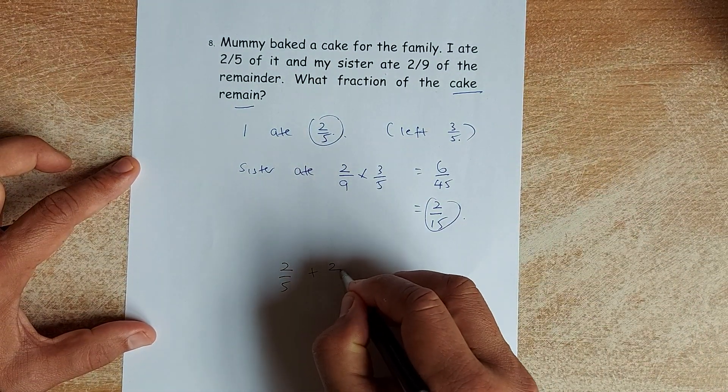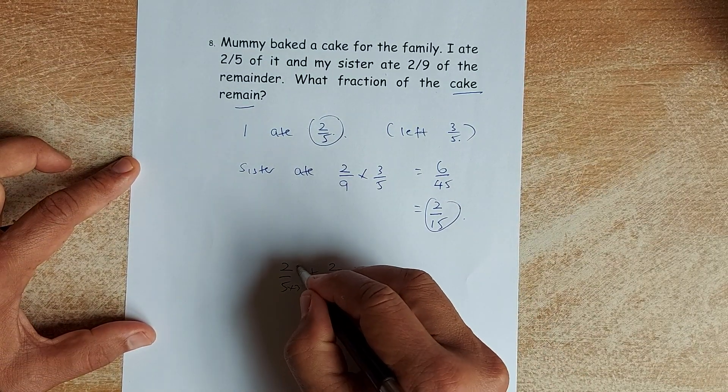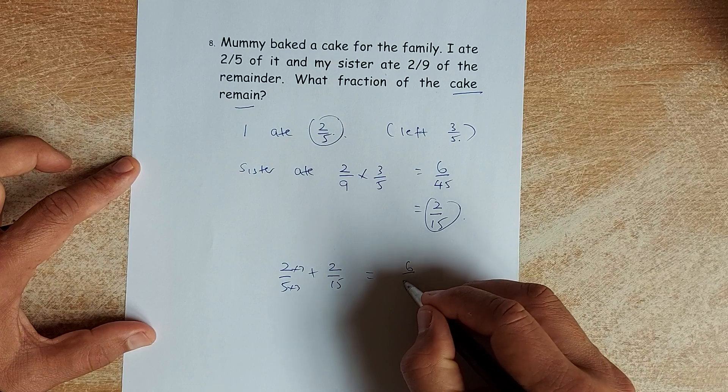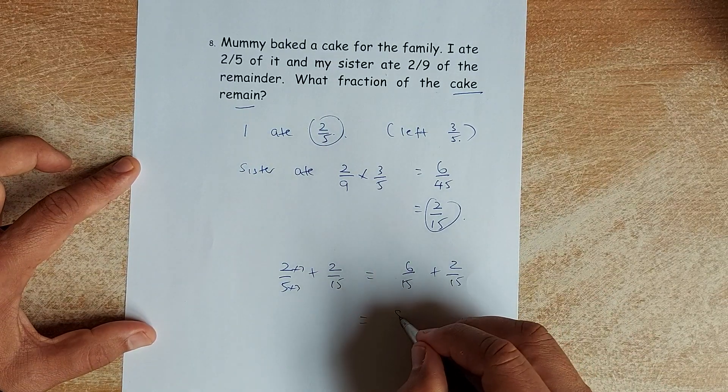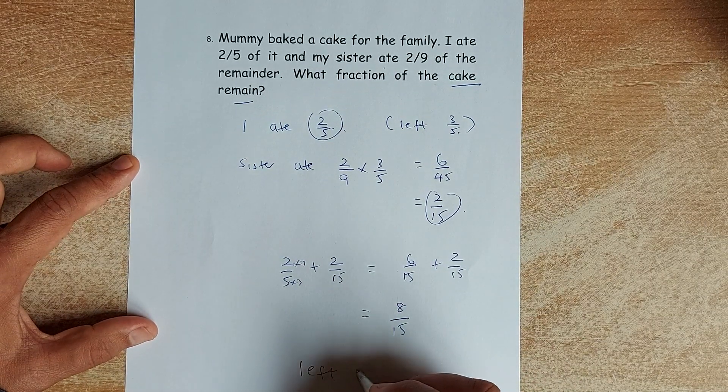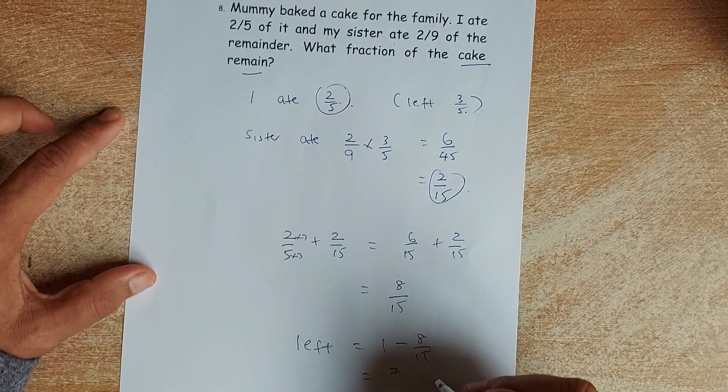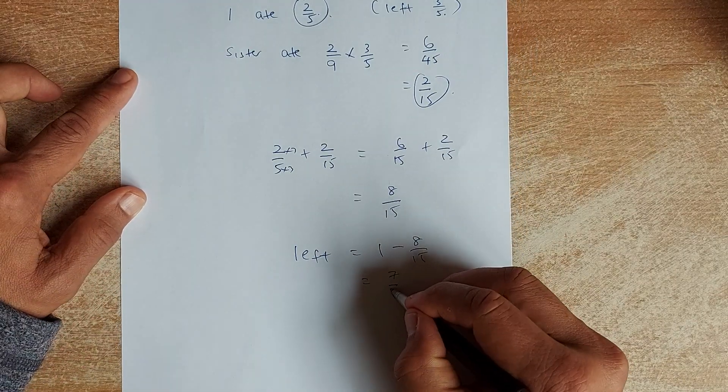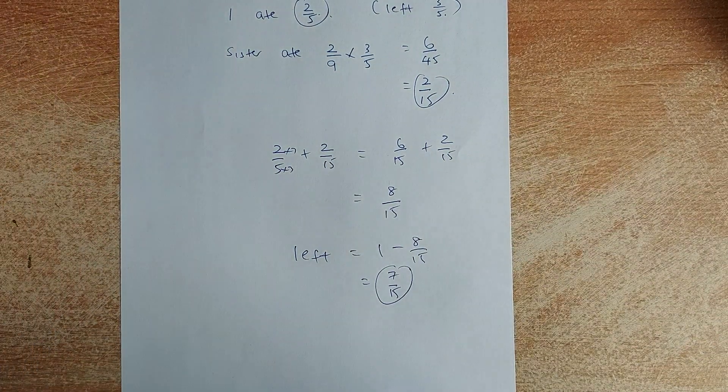So what fraction remain? So amount eaten is going to be I ate two fifths. My sister ate two fifteenths. So two fifths plus two fifteenths. Make it the same denominator. Times 3. So 6 over 15 plus 2 over 15. So together, me and my sister ate 8 over 15. So what is left is going to be 1 minus 8 over 15. And the answer is 7 over 15. So that will be the answer for the last question.